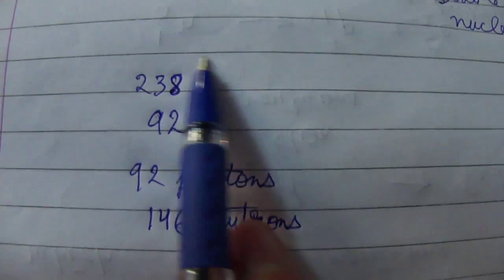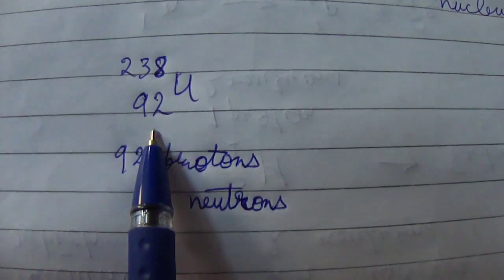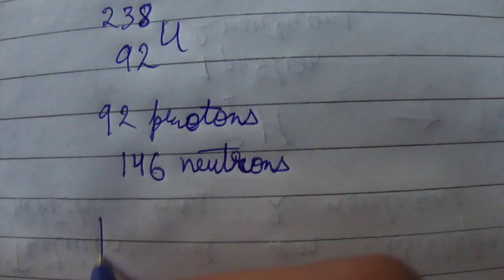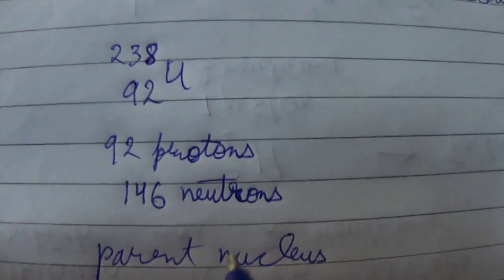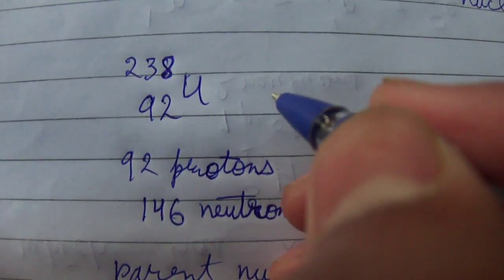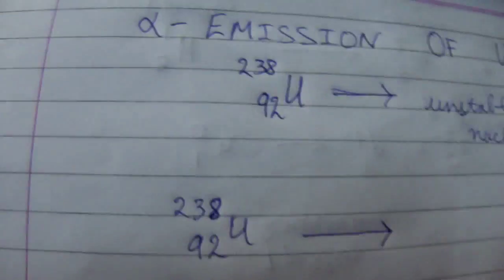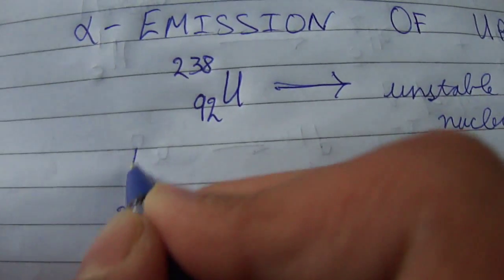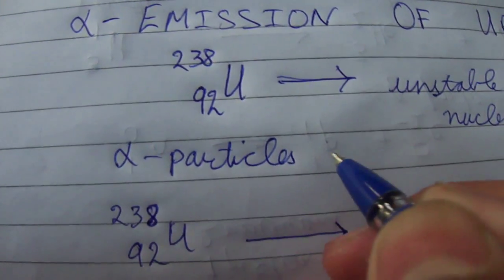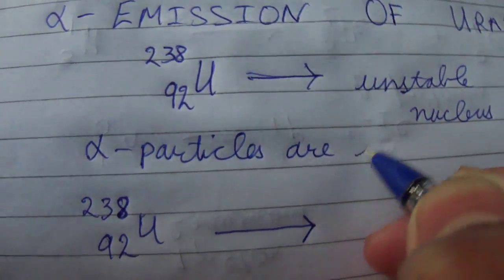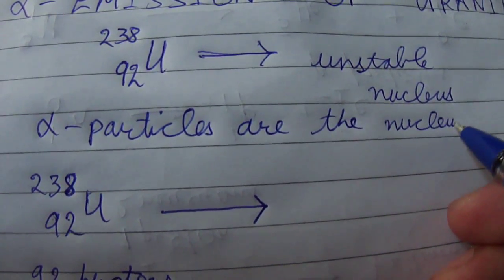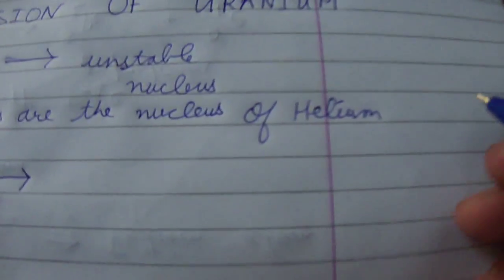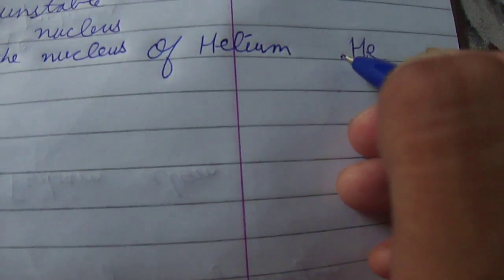In the alpha emission of uranium, the uranium nucleus with 92 protons and atomic mass 238 is the parent nucleus. Alpha particles are the nucleus of a helium atom.